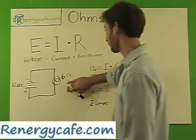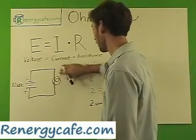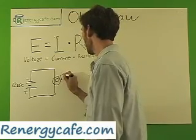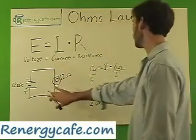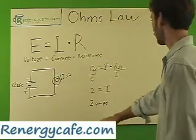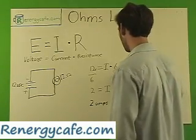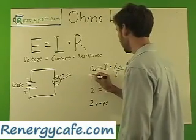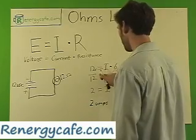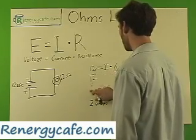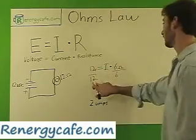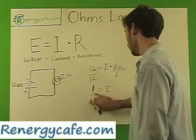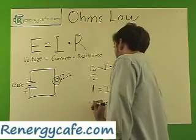Let's take this a step further. Let's say we had 12 ohms in this series circuit. We would go ahead and rewrite this and plug it in. 12 divided by 12 is 1, so that brings our amps down to 1 amp.